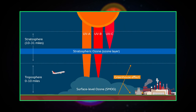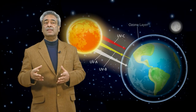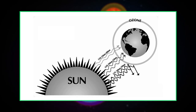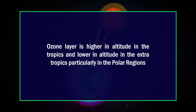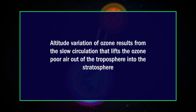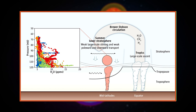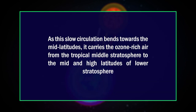This is how stratospheric ozone shields us from ultraviolet radiation — it doesn't reflect heat like a mirror, but rather absorbs it and transforms it into heat which is released back into space. Under the Dobson circulation, the ozone layer is higher in altitude in the tropics and lower in altitude in the extra-tropics, particularly in the polar regions. This altitude variation results from a slow circulation that lifts ozone-poor air out of the troposphere into the stratosphere.